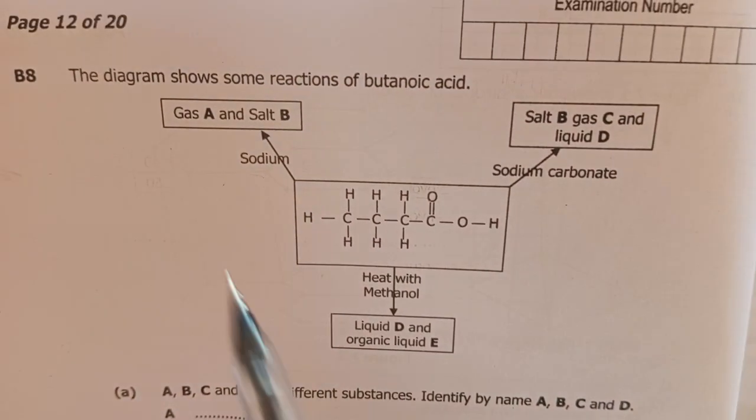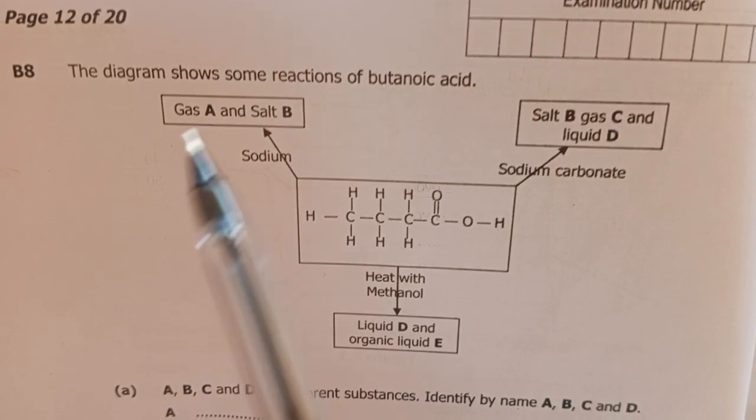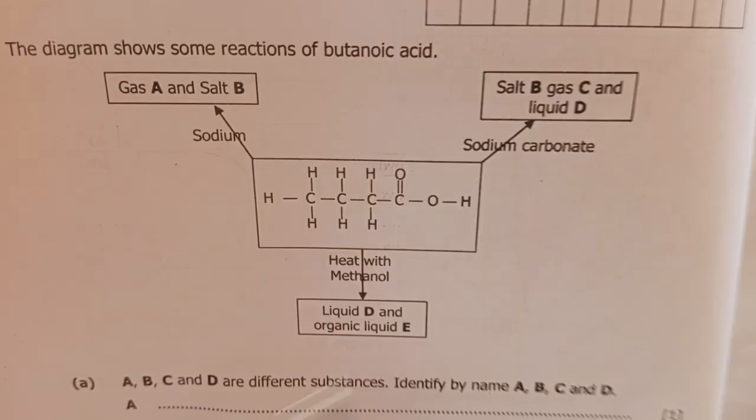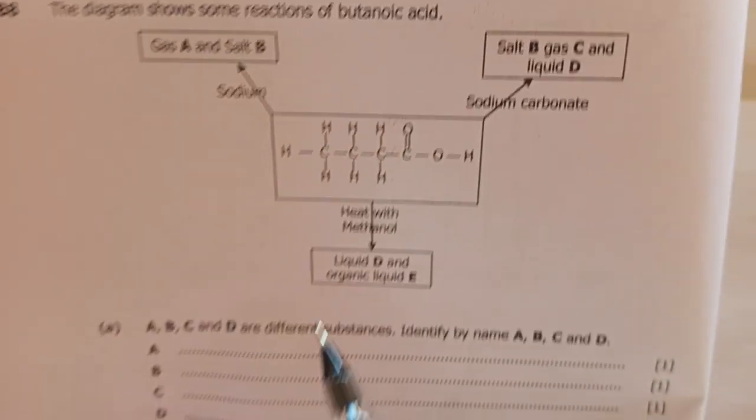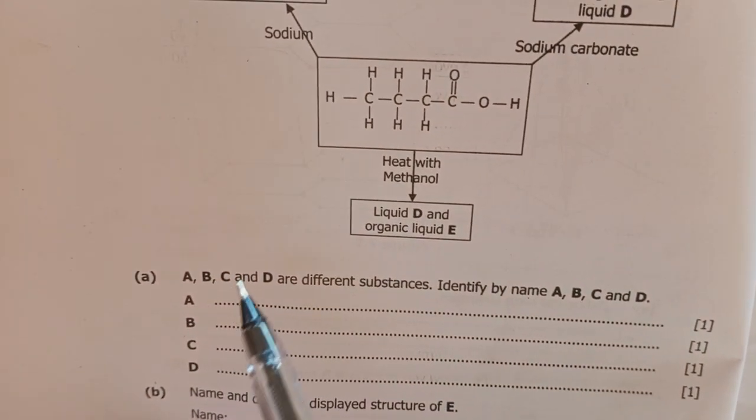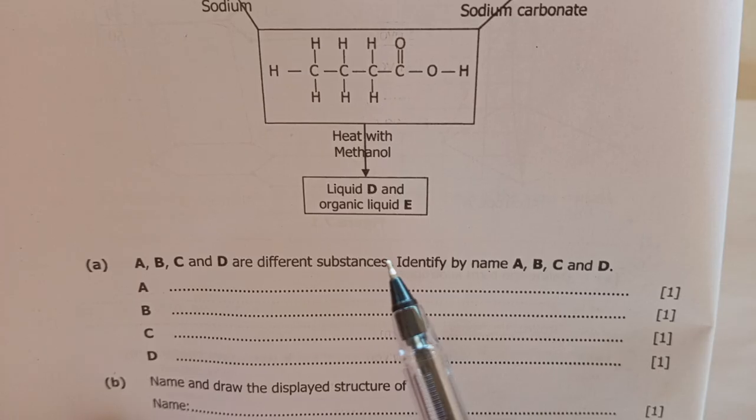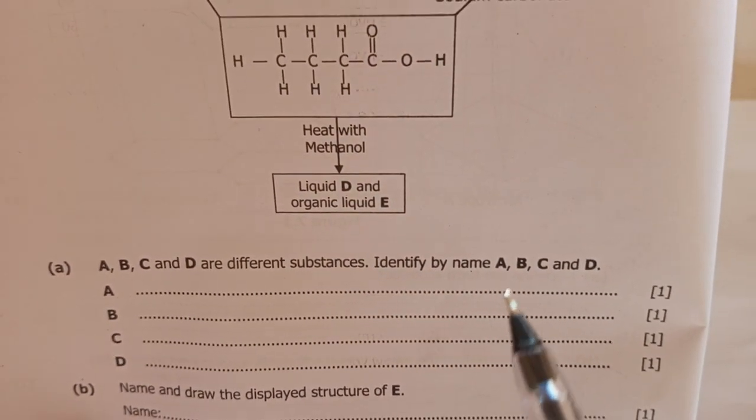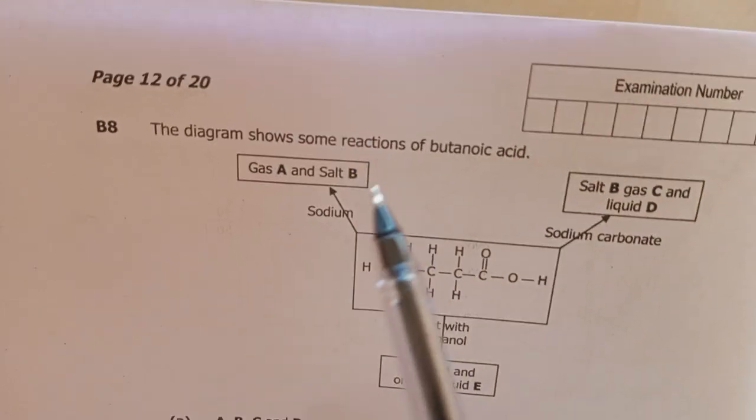So when you see this, just know you'll be required to name A, B, C, and D, just like the question is saying: A, B, C, and D are different substances. Identify by name A, B, C, and D. We've already identified A and B.